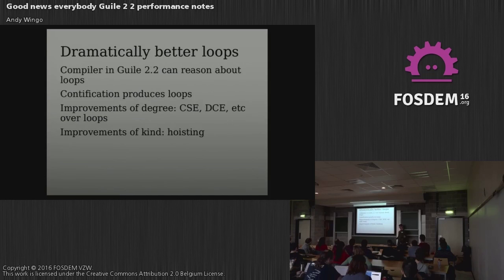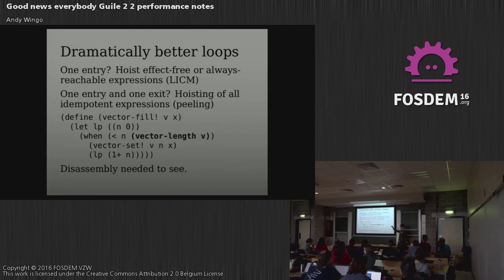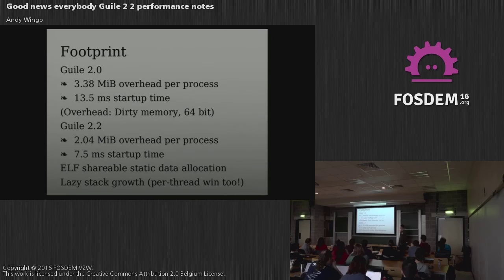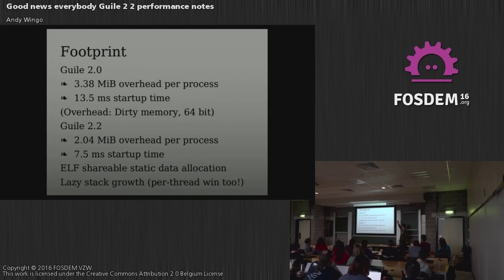We do great loop compilation now — it's a startling change compared to Guile 2.0, including hoisting and different sorts of loop transformations. The footprint is smaller too. On this machine, Guile 2.0 starts up in 13.5 milliseconds and now it's 7.5. Memory overhead is 3.4 megabytes in Guile 2.0 and only 2 in Guile 2.2, and this is per-process overhead if you have multiple processes — making it much more practical to deploy Guile in your organization.